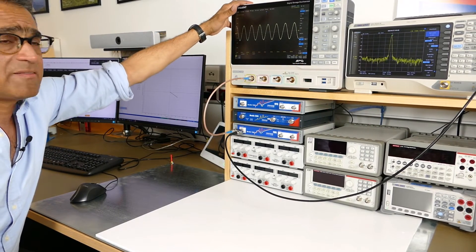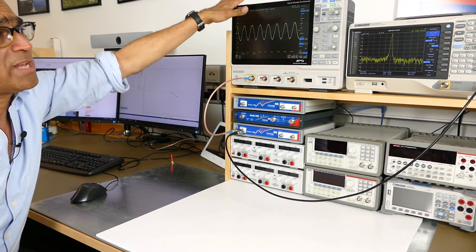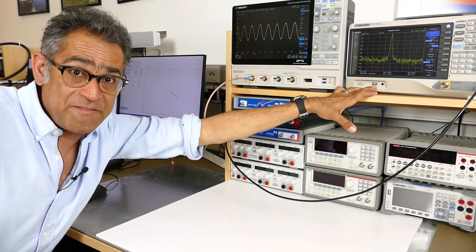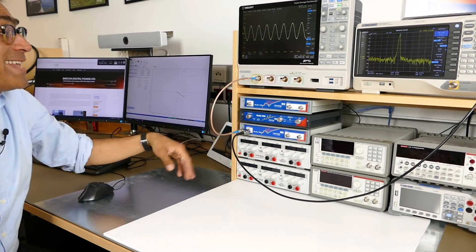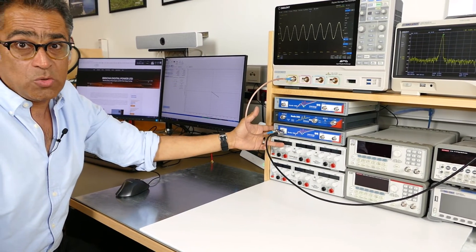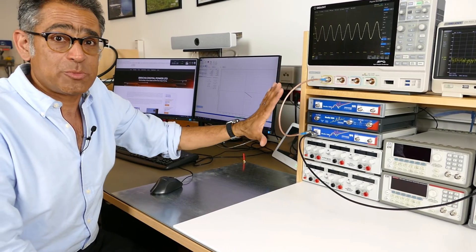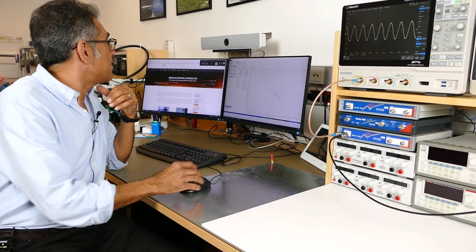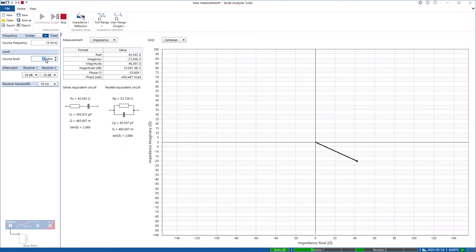So the input impedance of this is set to 50 ohms, the input impedance of that is already fixed at 50 ohms, this expects a 50 ohm load, and therefore all the measurements should be correct.